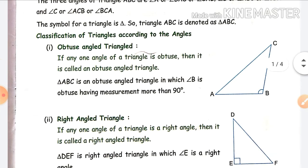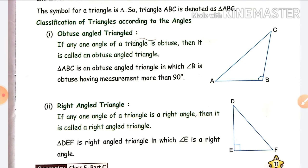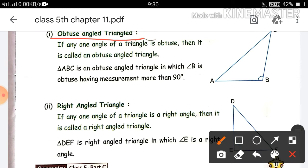Next we will read classification of triangle according to its angles. According to angle there are three types. First is obtuse angle triangle. As the name suggests, an obtuse angle is one which is more than 90 degrees and less than 180 degrees. So if any one angle of the triangle is more than 90 degrees, it is called an obtuse angle triangle.